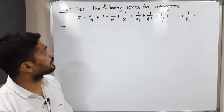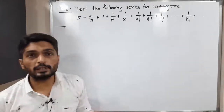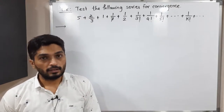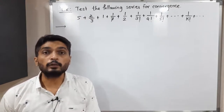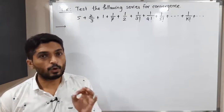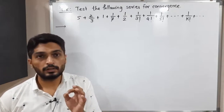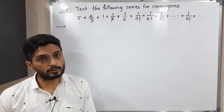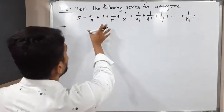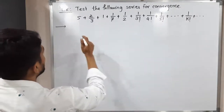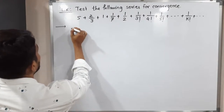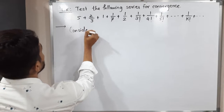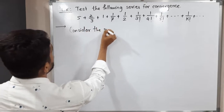If you observe the first four terms it is difficult to find any pattern, but for the remaining terms we definitely have a pattern. So what we will do is ignore the first four terms, since convergence of a series is not affected by adding or removing first few terms. So we will consider the remaining terms.